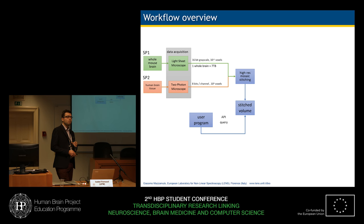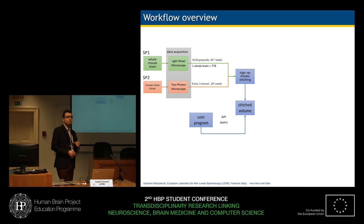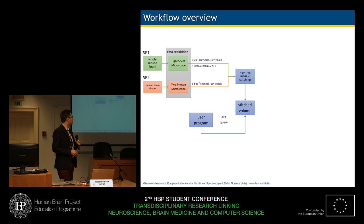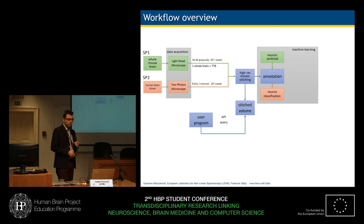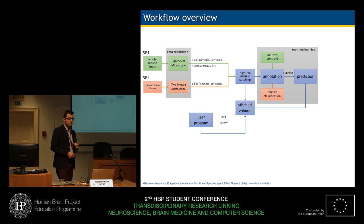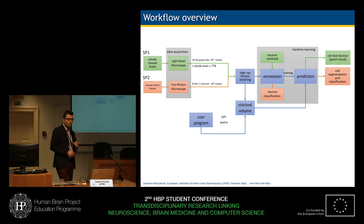Then after image stitching, we want to be able to extract information out of our raw images, and we do so using a deep learning approach. First, there is an annotation phase in which a human expert creates a ground truth that is then used to train a neural network. After prediction, we are able, for example, to extract the spatial distribution of cells in the whole mouse brain, or to do automatic cell segmentation and classification.